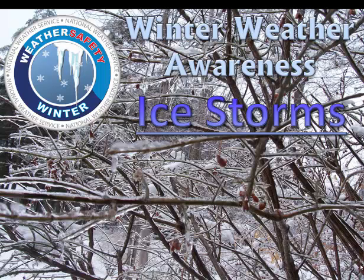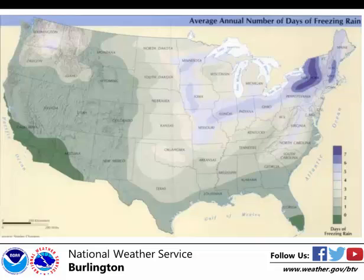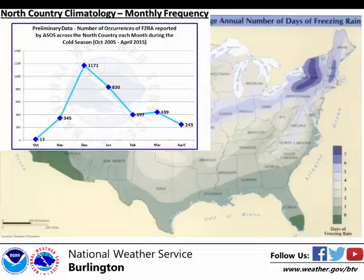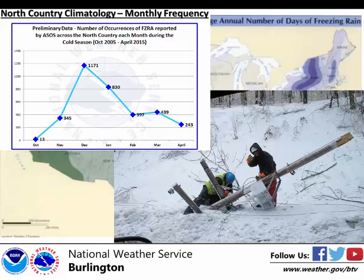On average, the Northeast experiences the most number of days of freezing rain throughout the continental U.S. annually. This freezing rain turns into ice on surfaces and can wreak havoc on an area. Ice storms can be some of the most costly weather phenomena to affect the Northeast. Heavy accumulations of ice can bring down trees and power lines, as well as topple utility poles and communication towers. Ice can disrupt communications and power for days, while utility companies repair extensive damage. Even small accumulations of ice can be extremely dangerous to motorists and pedestrians.